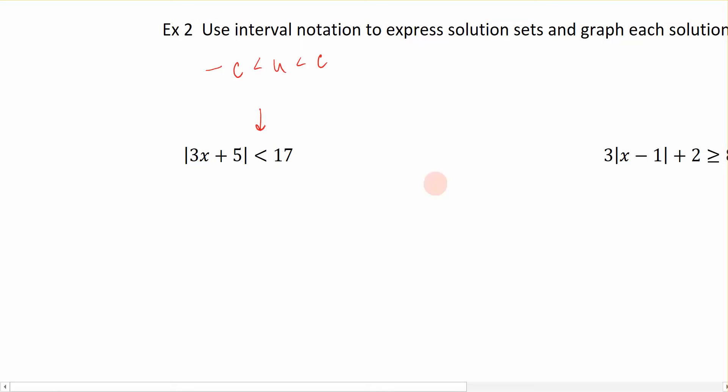Now, the way that we set that up is we take this value right here, which is the constant on the opposite side of the absolute value symbols. This constant is going to come over here, and we're going to make it a negative. Because when we have absolute value equations, we have negative and positive possible solutions. So that's why we're doing this.